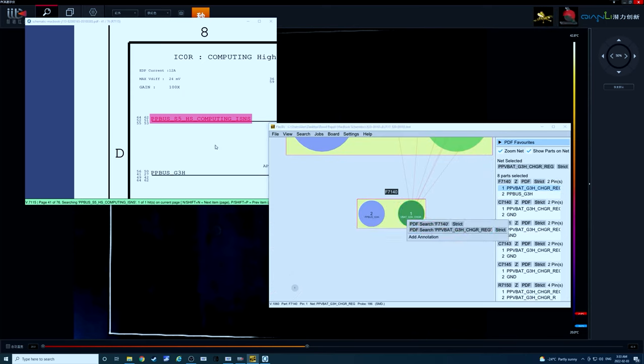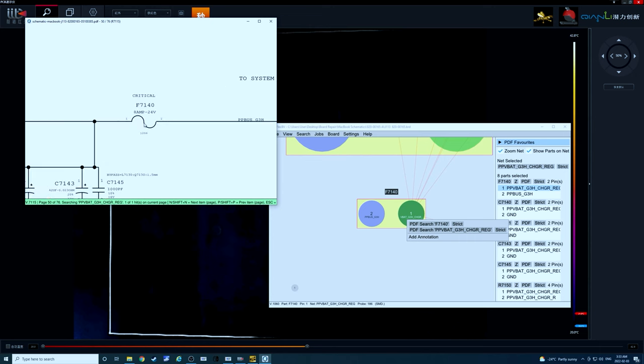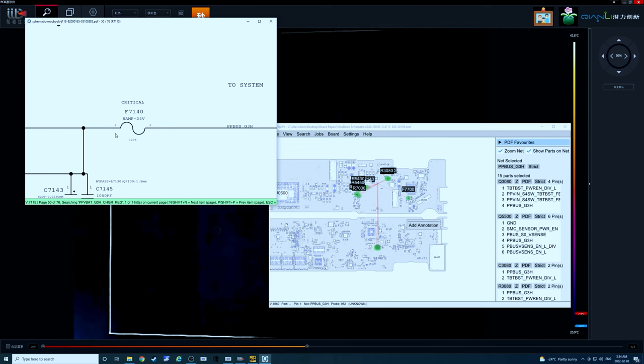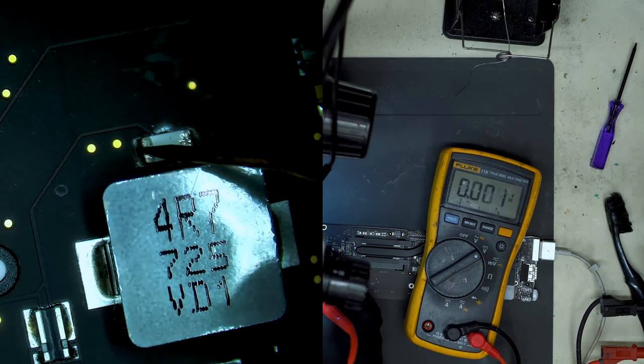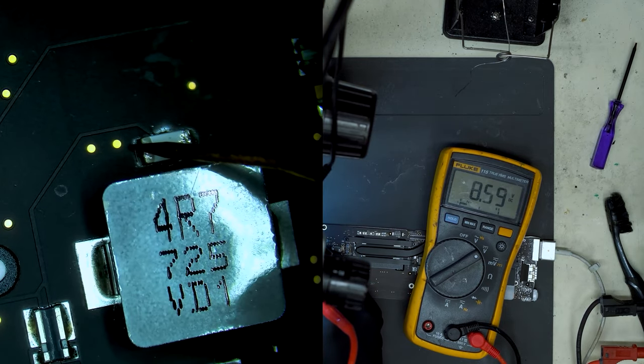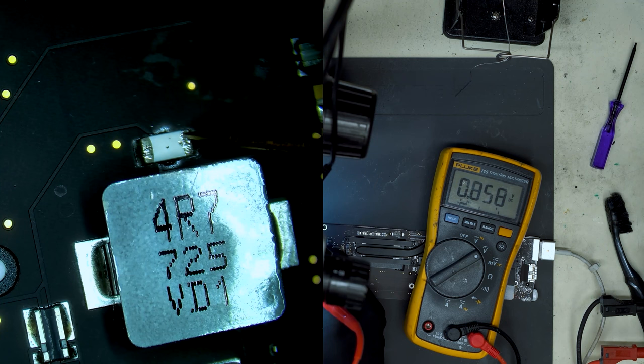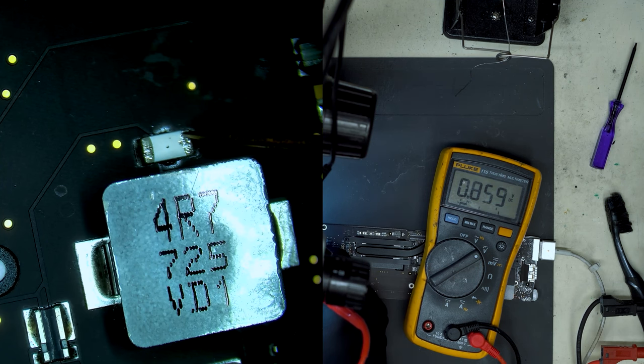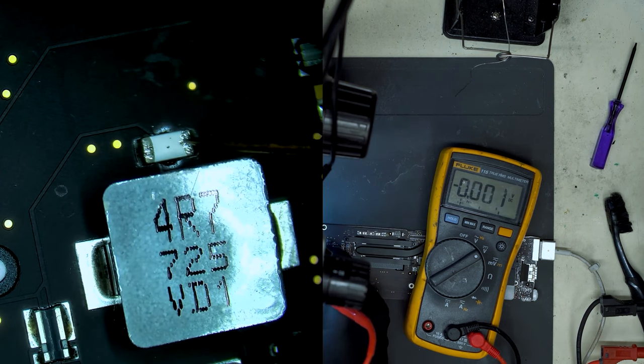If we look at the schematics over here we can see that this is the point where PPBus G3 hot goes to the rest of the system and we notice that when we take our measurement here on this side which is V bat we get that 8.6 volts which is correct but on this side we're getting 0.8 volt. So after relieving the short we do have voltage on PPBus G3 hot but it is incorrect voltage.